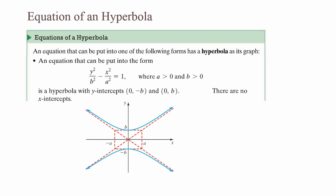An equation in the form y² / b² − x² / a² = 1, where a > 0 and b > 0, is a hyperbola with y-intercepts (0, −b) and (0, b) — there are no x-intercepts. The minus sign identifies it as a hyperbola. The graph looks like two parabolas: one opening up with a vertex of (0, b) and one opening down with a vertex of (0, −b).